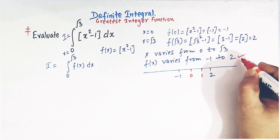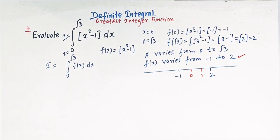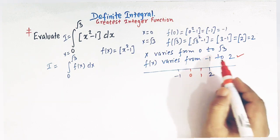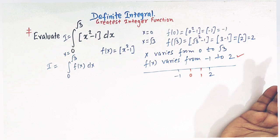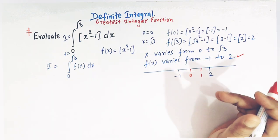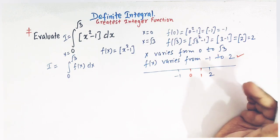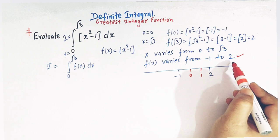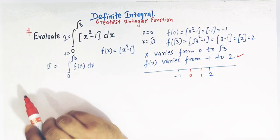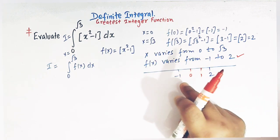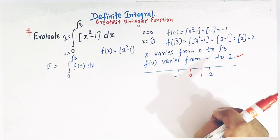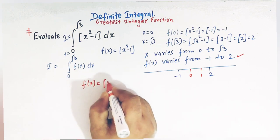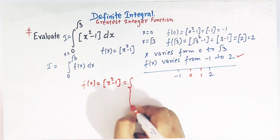This is a very important step while evaluating these type of integrals. Whenever we come across the greatest integer function, our prime objective is to search for integers. So when x varies from 0 to √3, f(x) varies from minus 1 to 2, and we have to search for integers which lie between minus 1 and 2. Now we will redefine f(x) accordingly.